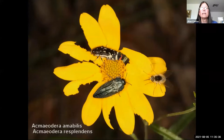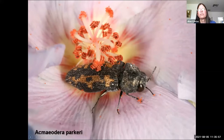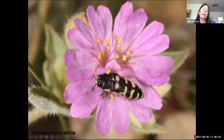Some pollinators are considered generalists, including many beetles and flies. Among the beetles are buprestrid Acmaeoderas beetles — you can see little grains of red pollen from a desert hibiscus on this beetle's feet. Acmaeoderas visit a great many plants. This one here is a mimic of a wasp; when it flies it keeps its elytra closed and extends its wings beyond them, looking like a wasp in flight.